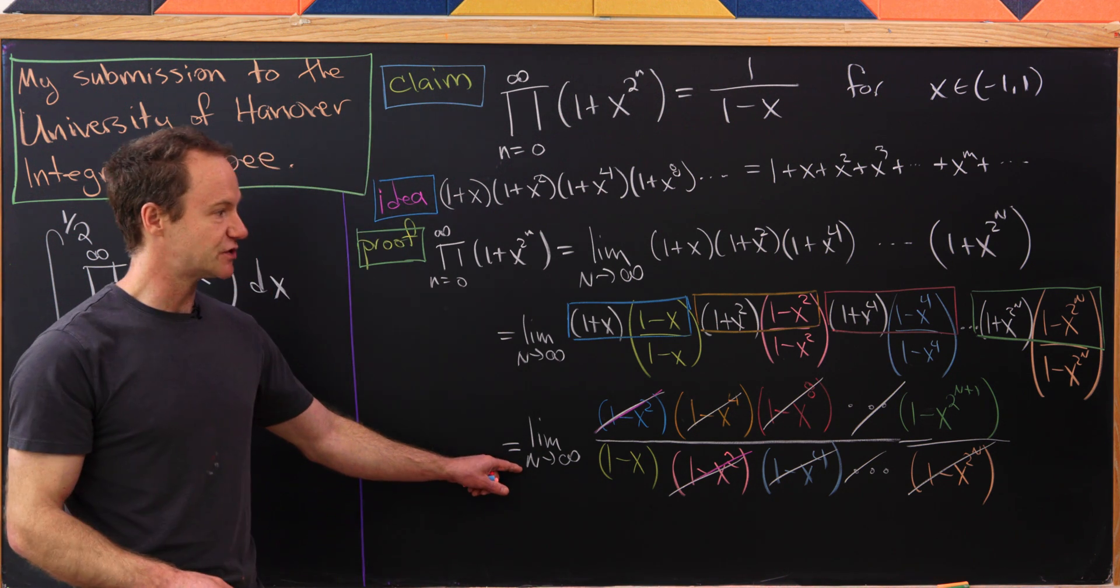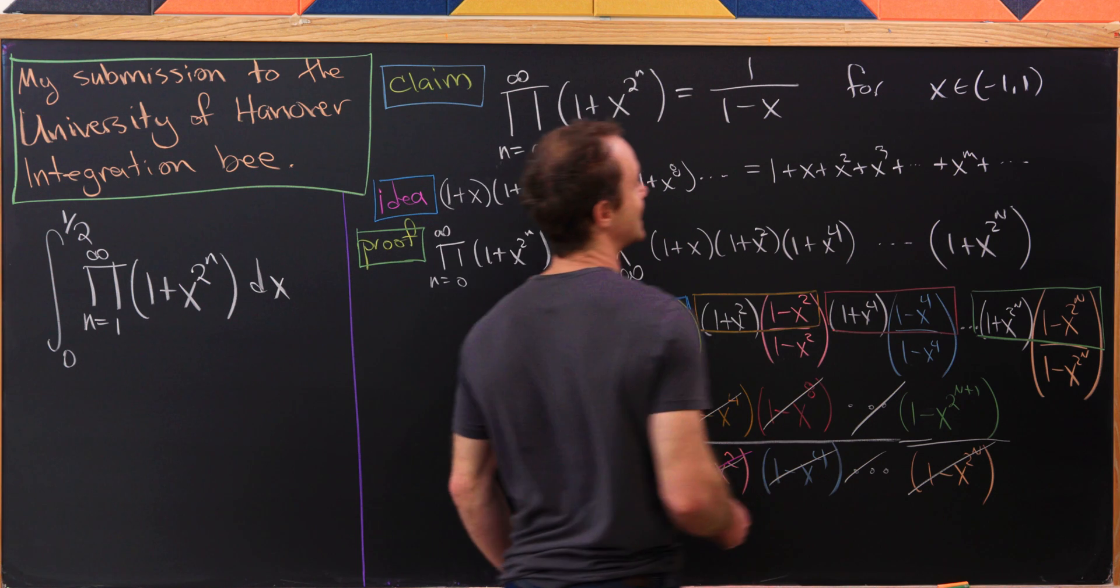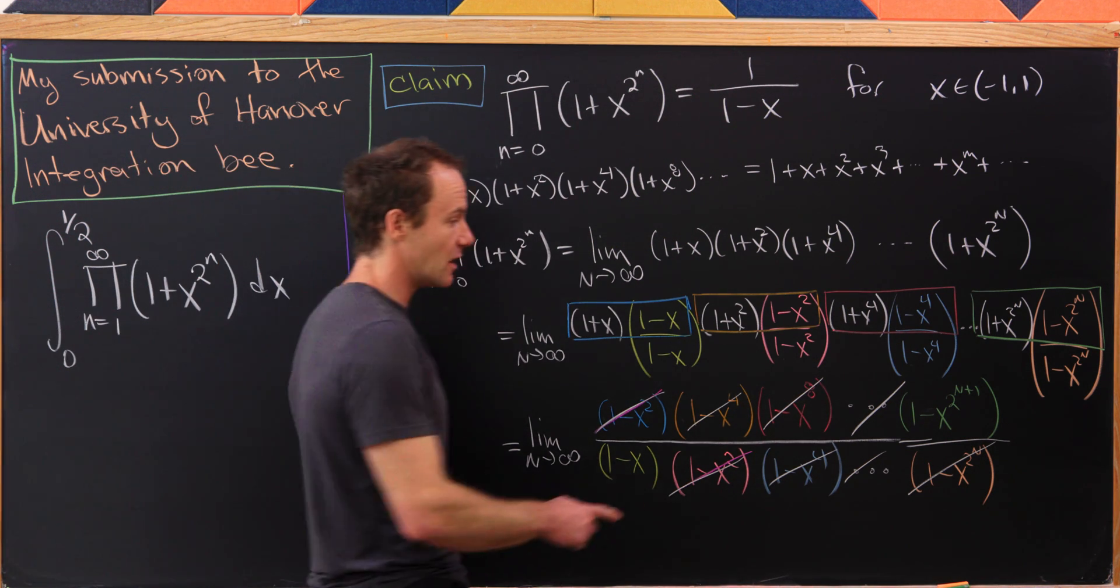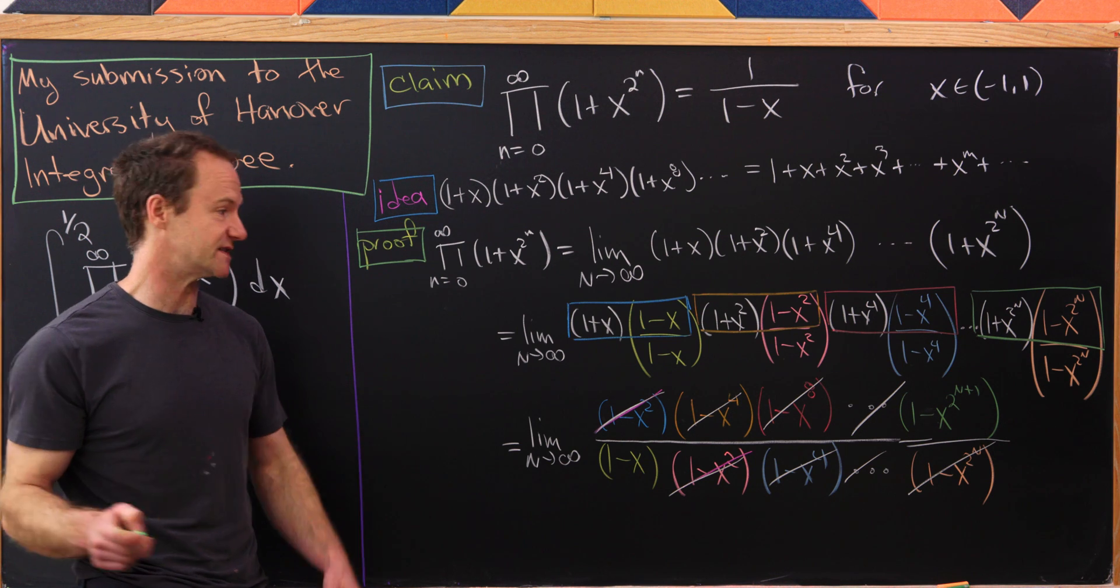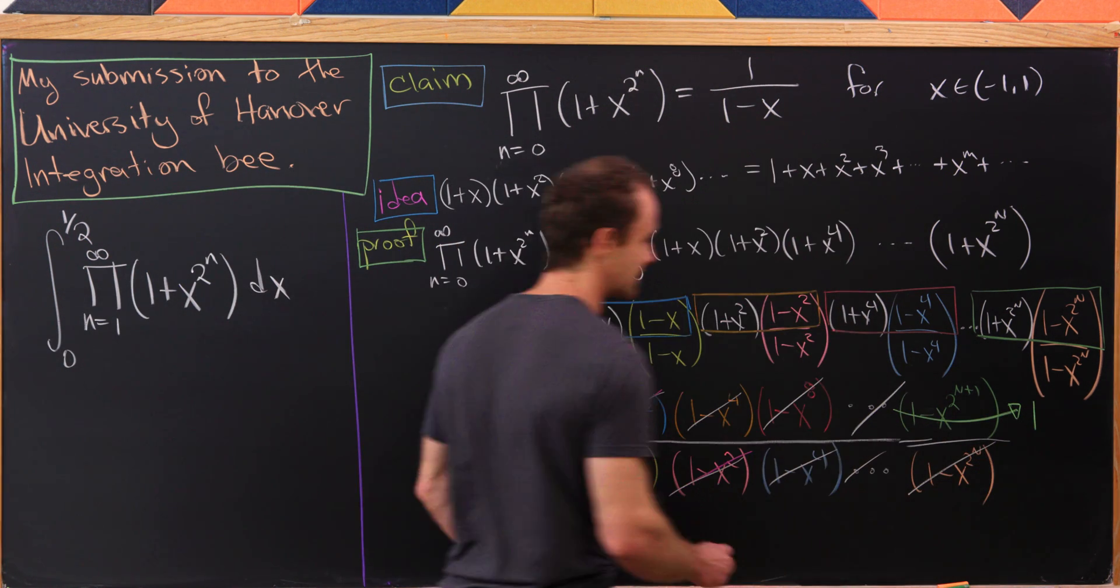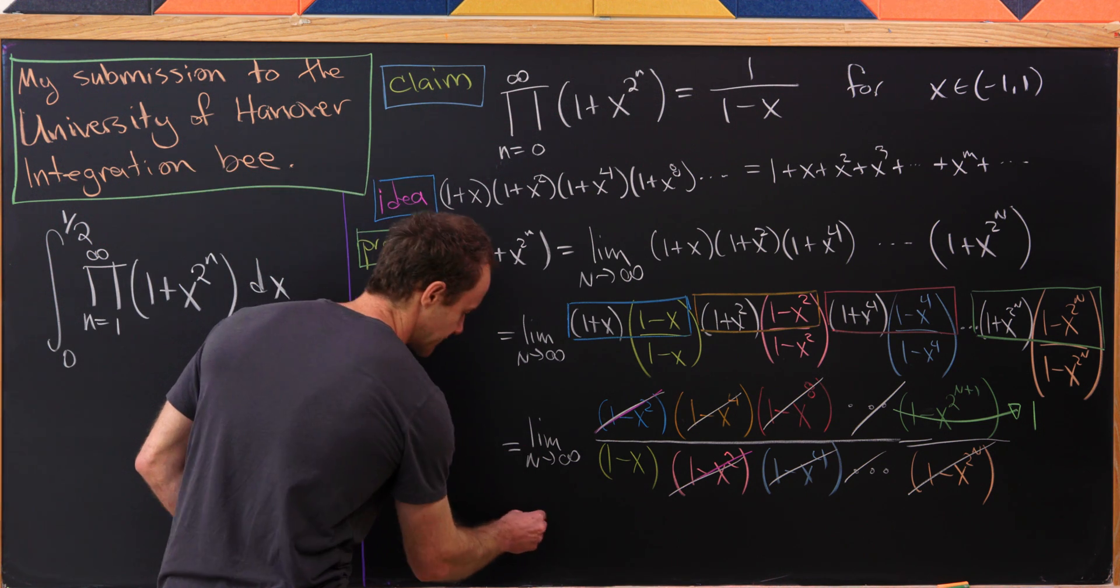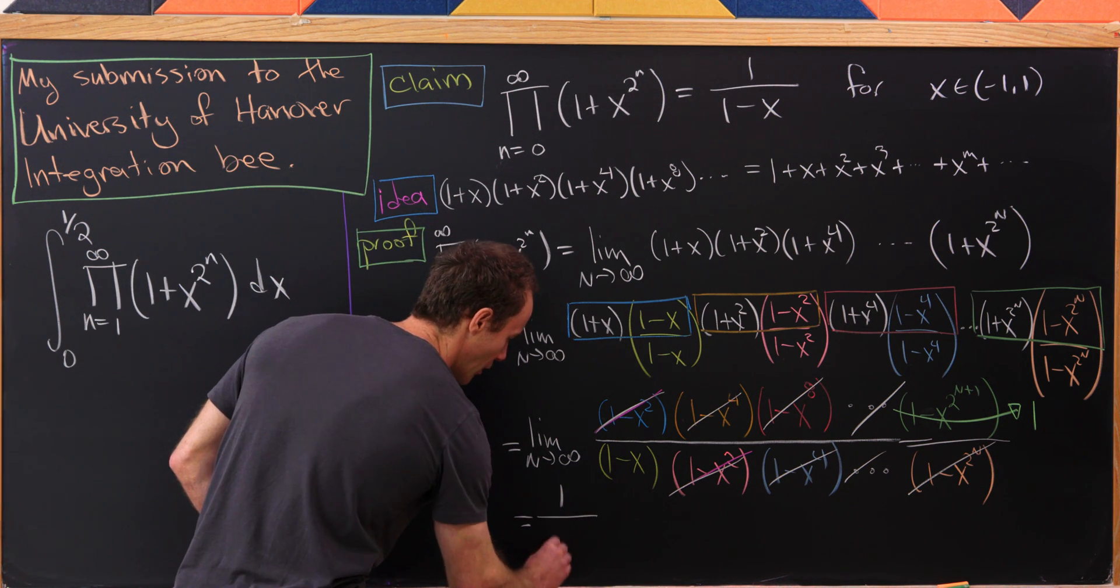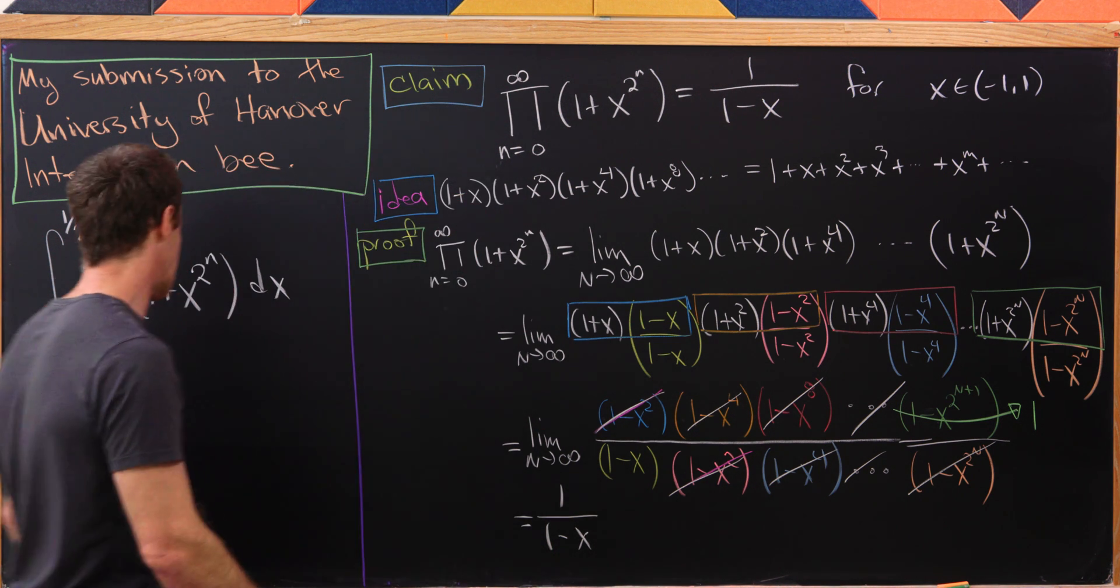But now as n goes to infinity, because x is between negative 1 and 1, we know that this x to the 2 to the n plus 1 will trend off towards 0, which means this term as a whole trends off towards 1. So that leaves us with 1 over 1 minus x. We've proven this claim.